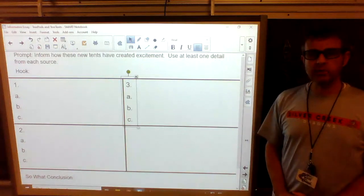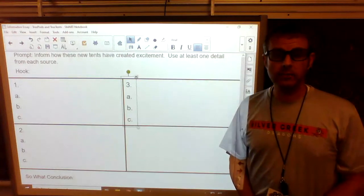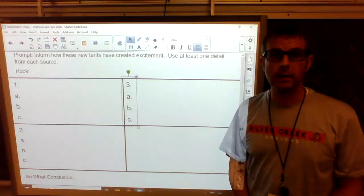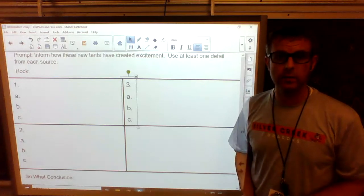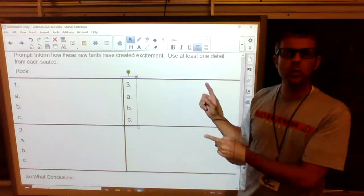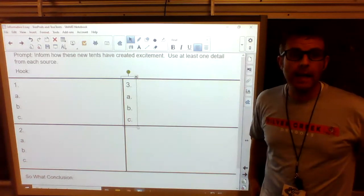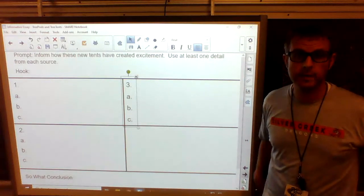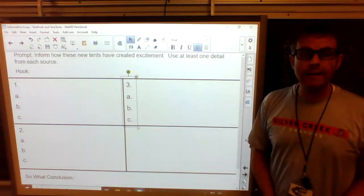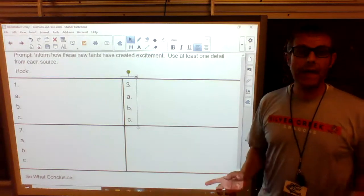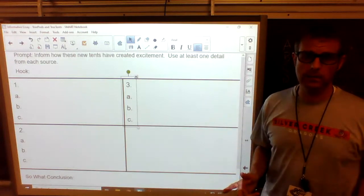Alright, welcome back. Now I did change up one thing. As you notice up here at the top, normally we just, or the last time, we only put our hook at the top. But we have a detailed prompt this time with specific instructions of what we must do. So I have given you the short version of the prompt. I put, one, we have to inform how these new tents have created excitement. That's what we're writing about. And I put, use at least one detail from each source. So we have to use one detail, at least one, from the tree pod and at least one from the tree tent.